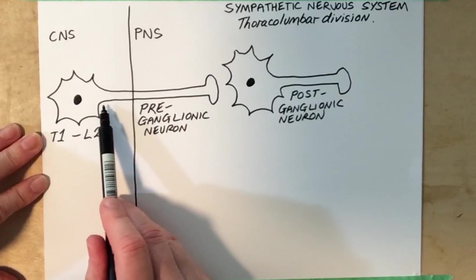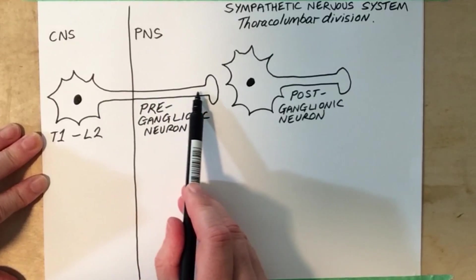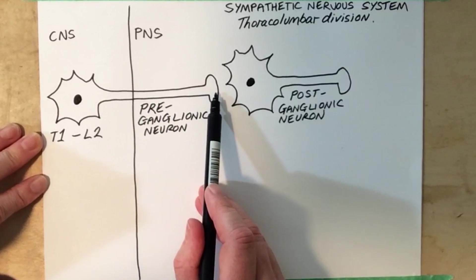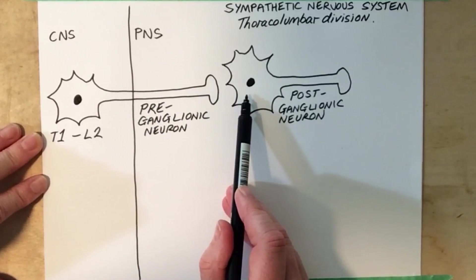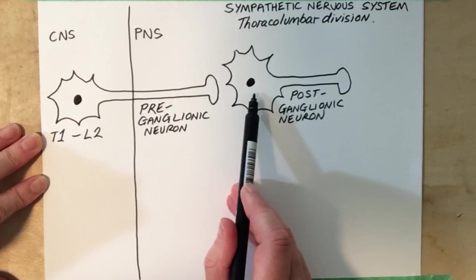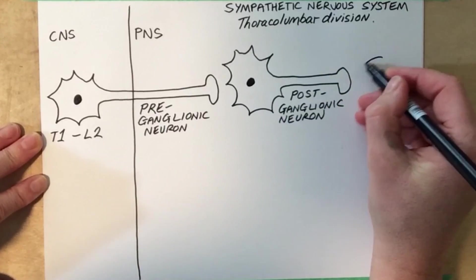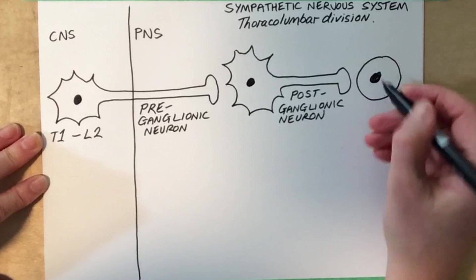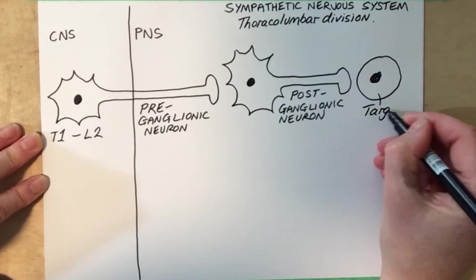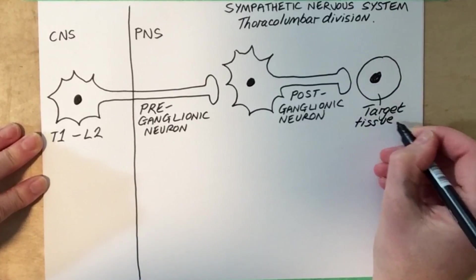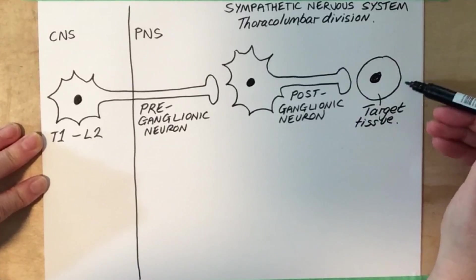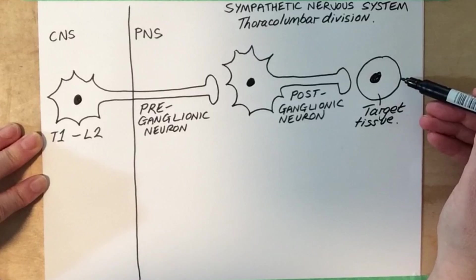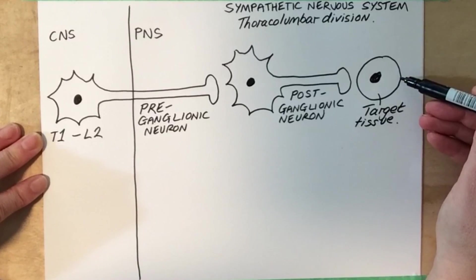The preganglionic neuron extends out a long axon and will synapse with the cell body of a postganglionic neuron. And the postganglionic neuron will synapse with the target tissue. These target tissues can either be smooth muscle, cardiac muscle, or gland.